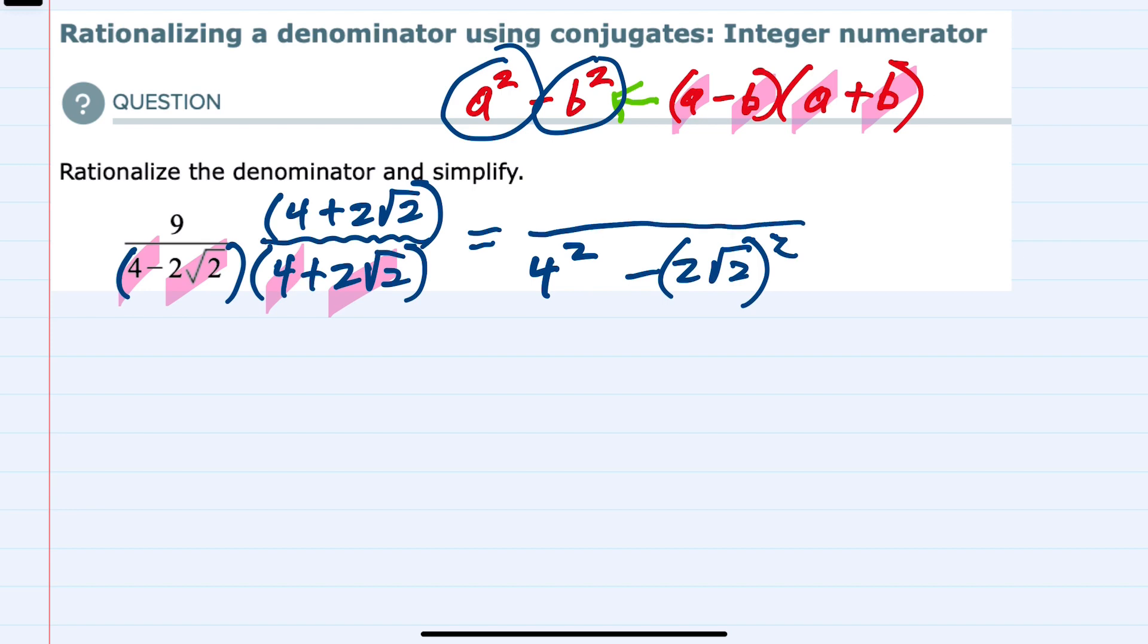I'll just bring the numerator over for now, 9 times 4 plus 2 square roots of 2. And the denominator here will then simplify. 4 squared is 16. We have a minus.